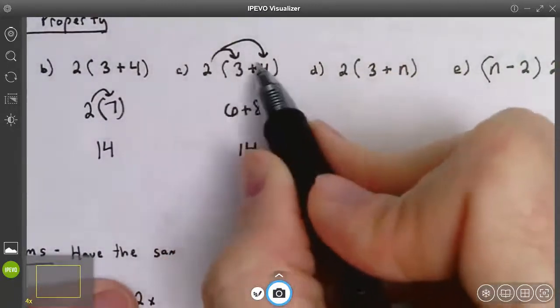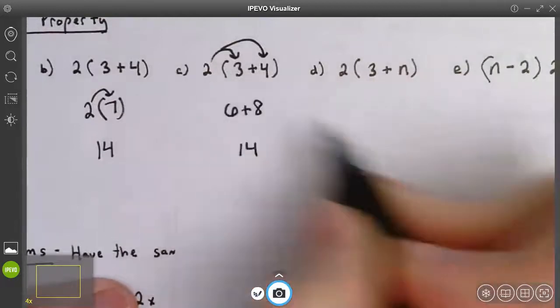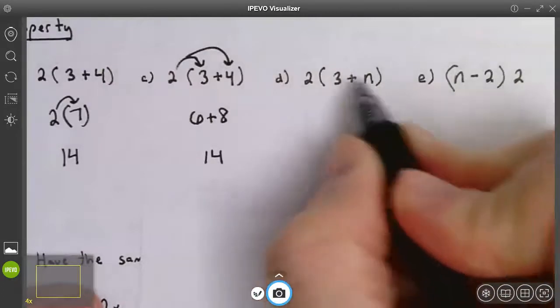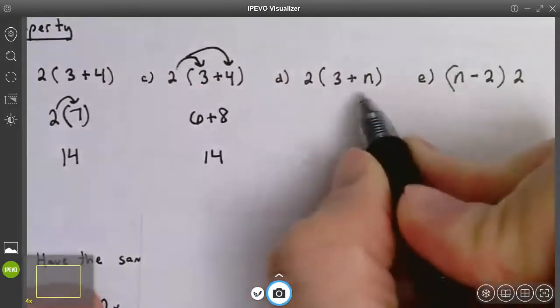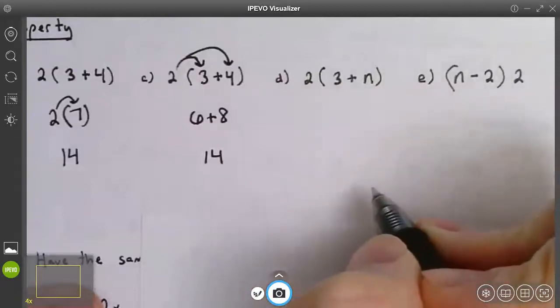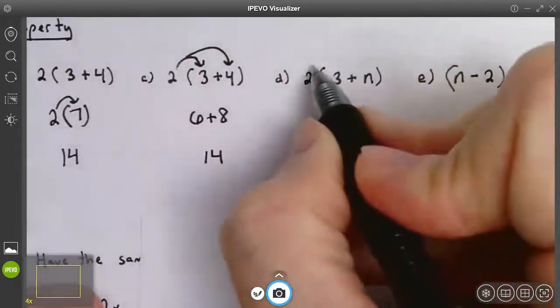We wouldn't use the distributive property on a numerical expression, but we would use the distributive property if we had an algebraic expression like this one, because I cannot combine 3 plus n. They are not like terms. So I have to use the distributive property.